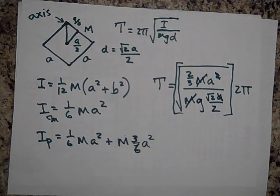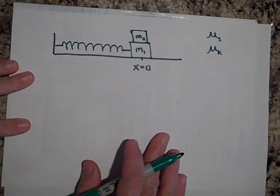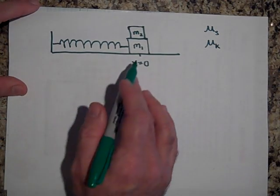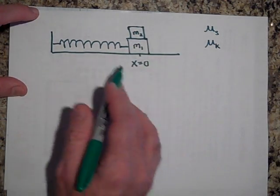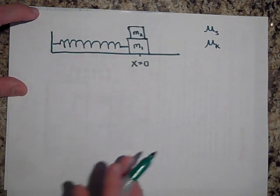Okay, I have one other quick one for you, trying to get this done in one video. Here's our system. We pull this back. What's the maximum we can pull this back and have these two not slip? This is frictionless but there's a mu s on the top and bottom block.